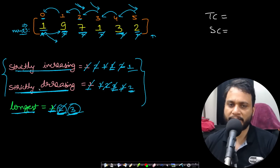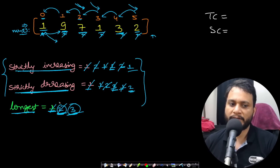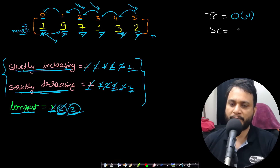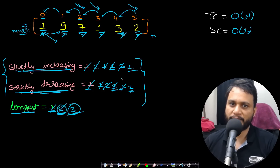The result can be from a strictly increasing or strictly decreasing subarray — it doesn't matter. The question asks to return the longest subarray that is either strictly increasing or strictly decreasing. The time complexity is O(n) for this single-pass solution, and the space complexity is O(1) because we only use 3 variables that don't depend on the input size. Let's now look at the code.